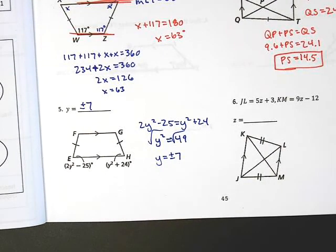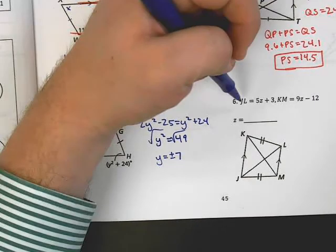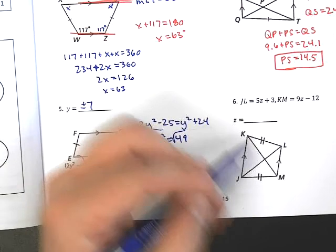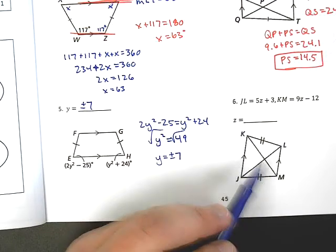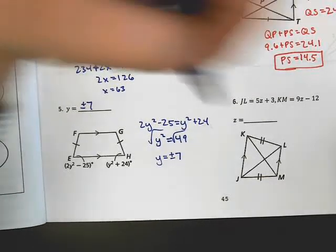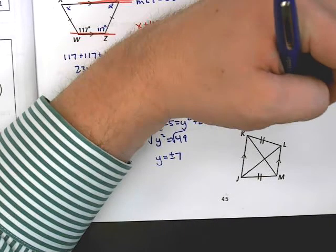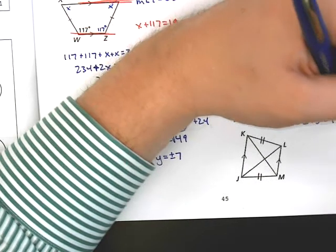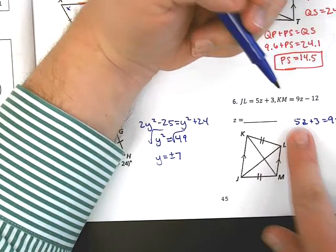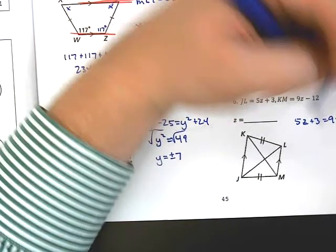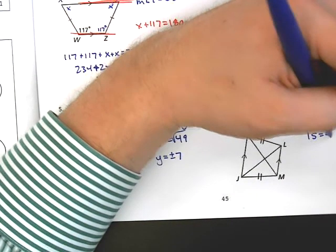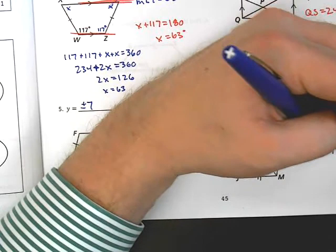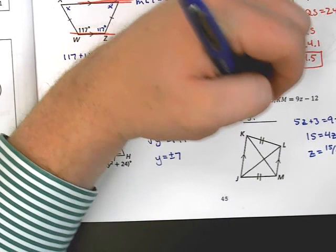Alright, so let's see here. Well, JL, which is a diagonal, is 5Z plus 3. KM is also a diagonal, and I have an isosceles trapezoid. Oh, this is easy, guys. Isosceles trapezoids have congruent diagonals. So, 5Z plus 3 equals 9Z minus 12. And let's see here. I'm going to move this and this. So, 15 is equal to 4Z. Z is equal to 15 fourths or 3.75.